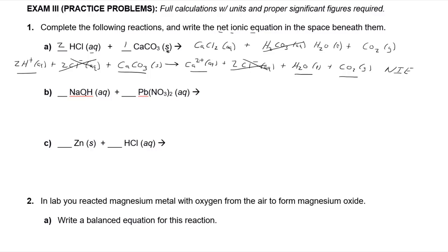Next reaction: sodium hydroxide with lead nitrate — a double displacement reaction. You swap partners: you get sodium nitrate (aqueous, because all nitrates and all sodium compounds are soluble) and lead hydroxide. Lead was two-plus because it had two nitrates, giving Pb(OH)2. Looking at the solubility table, lead hydroxide is a solid — that's your precipitate.